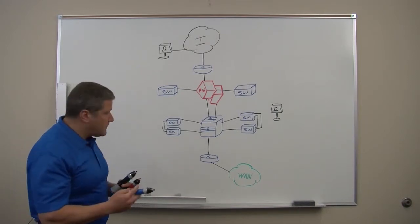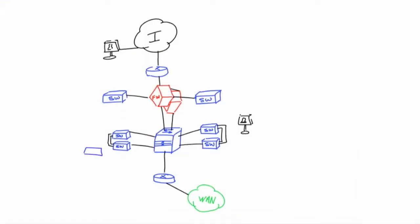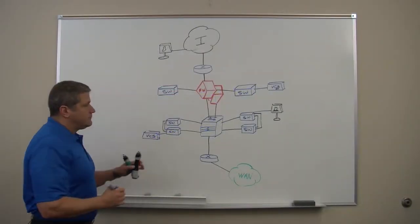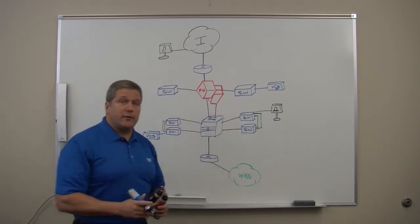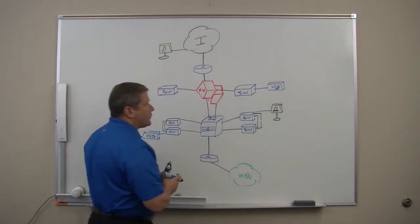So for example, if we were to add a couple of elements to this infrastructure—one being Cisco's video control system on the inside of the network, also Cisco's video control expressway on the DMZ of your network—we would then be able to register these internal endpoints centrally to the control system and obviously would support multiple endpoints inside your environment while also having connectivity between VCS and VCS expressway at the perimeter of your network.